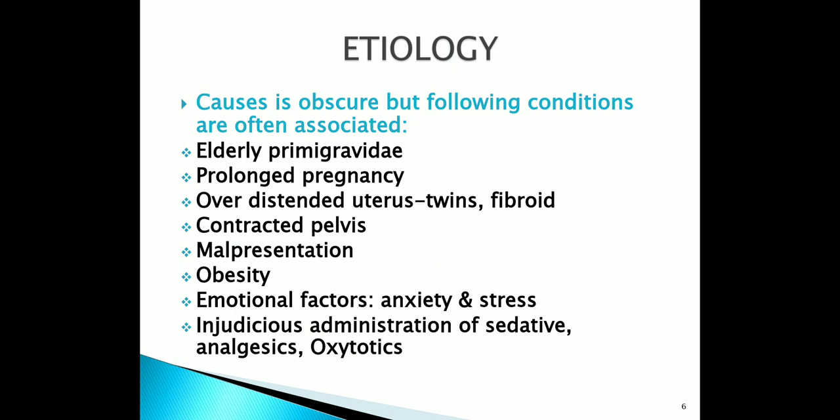Etiology: as the physiology of normal uterine contraction is not fully understood, the causes of its disordered action remain obscure. However, the following clinical conditions are often associated with it. It is prevalent in first birth, especially with elderly women, prolonged pregnancy, over-distension of uterus like twins and fibroids, emotional factors like anxiety and stress, constitutional factors like obesity, contracted pelvis, malpresentation, injudicious administration of sedatives, analgesics and oxytocin, and premature attempt at vaginal delivery or attempted instrumental vaginal delivery under light anesthesia.